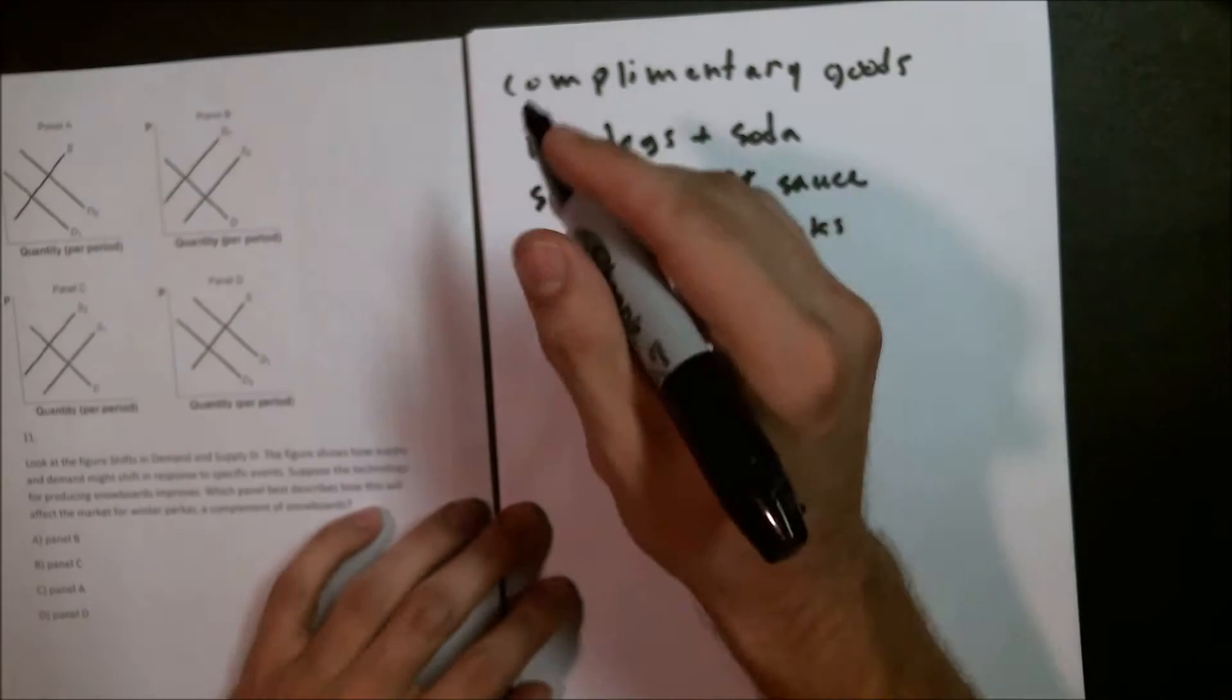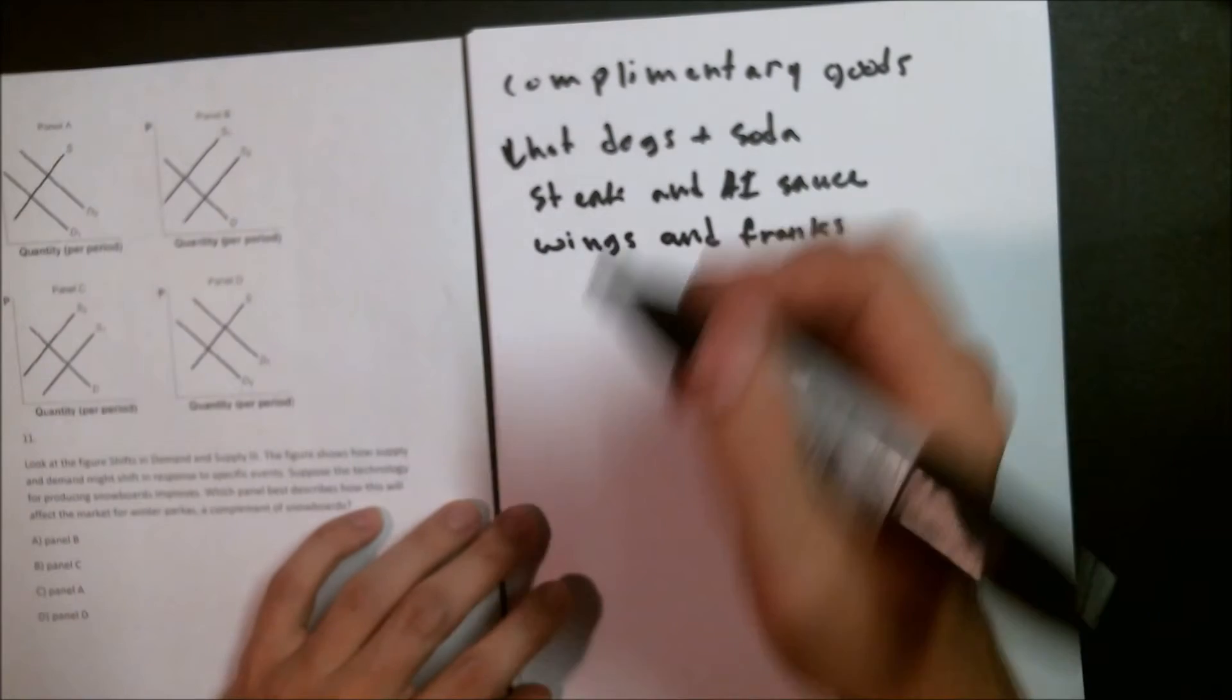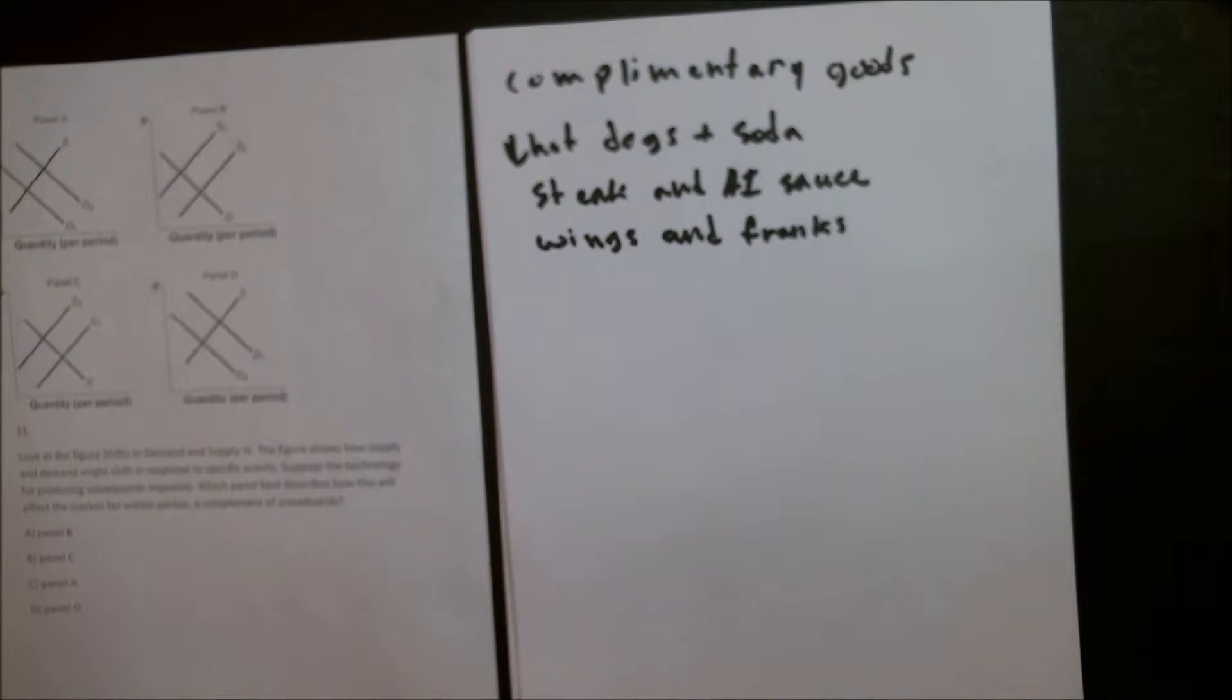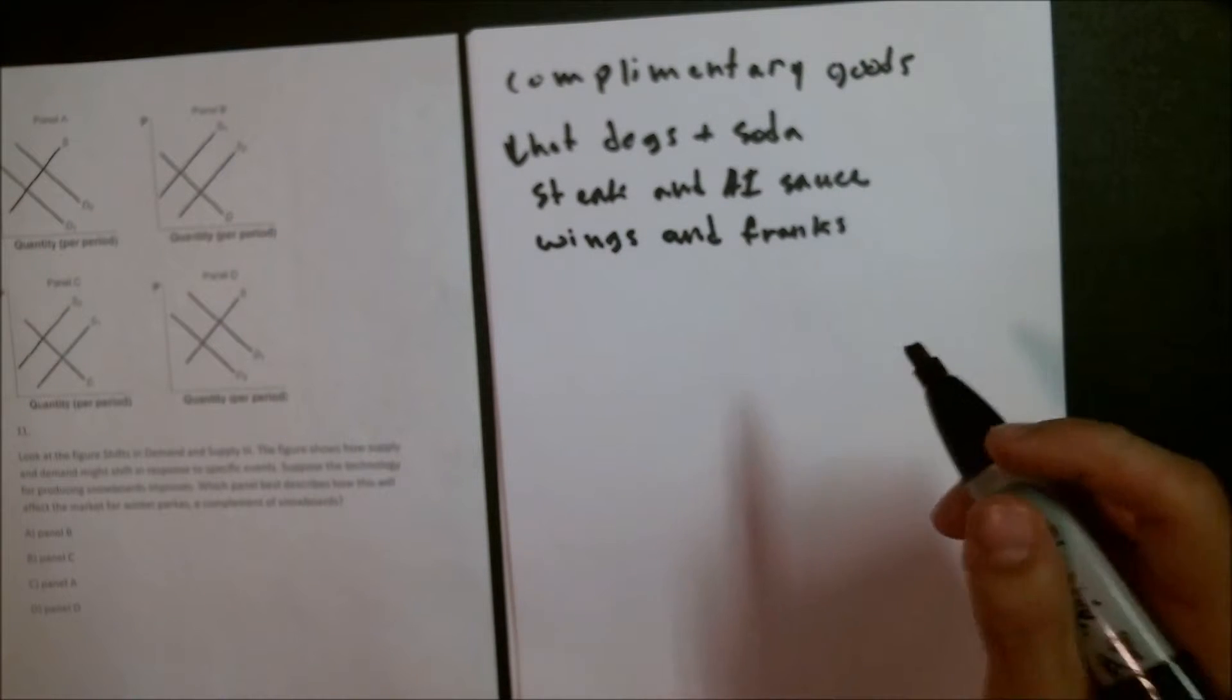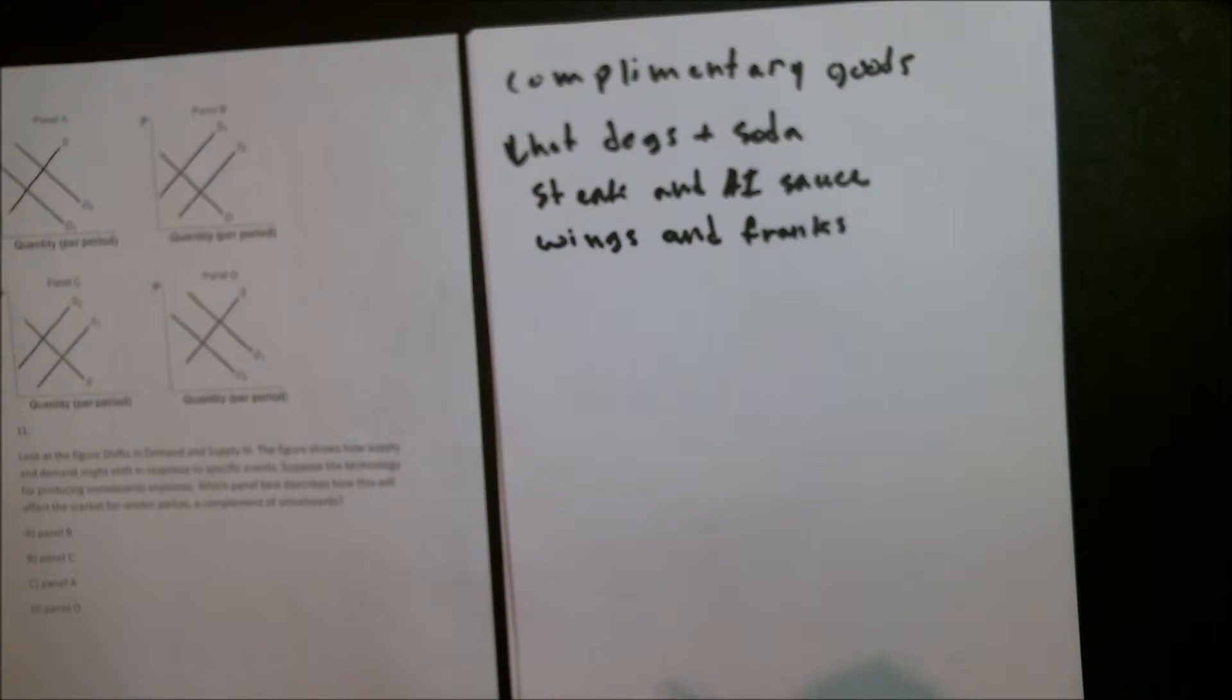These things are complementary goods because they go well together. Say there was a decrease in the price of hot dogs, so naturally more people were buying hot dogs. That would result in an increase in the demand for soda because more people want a soda to go with their hot dog. Same thing goes for steak, A1 sauce, and wings and franks. The price of steaks go down, people are going to buy more steak, and then they're going to want to buy more A1 sauce to put on their steak. Basically, a decrease in price or an increase in production possibilities for any of these things will result in an increase in demand for the complementary good.